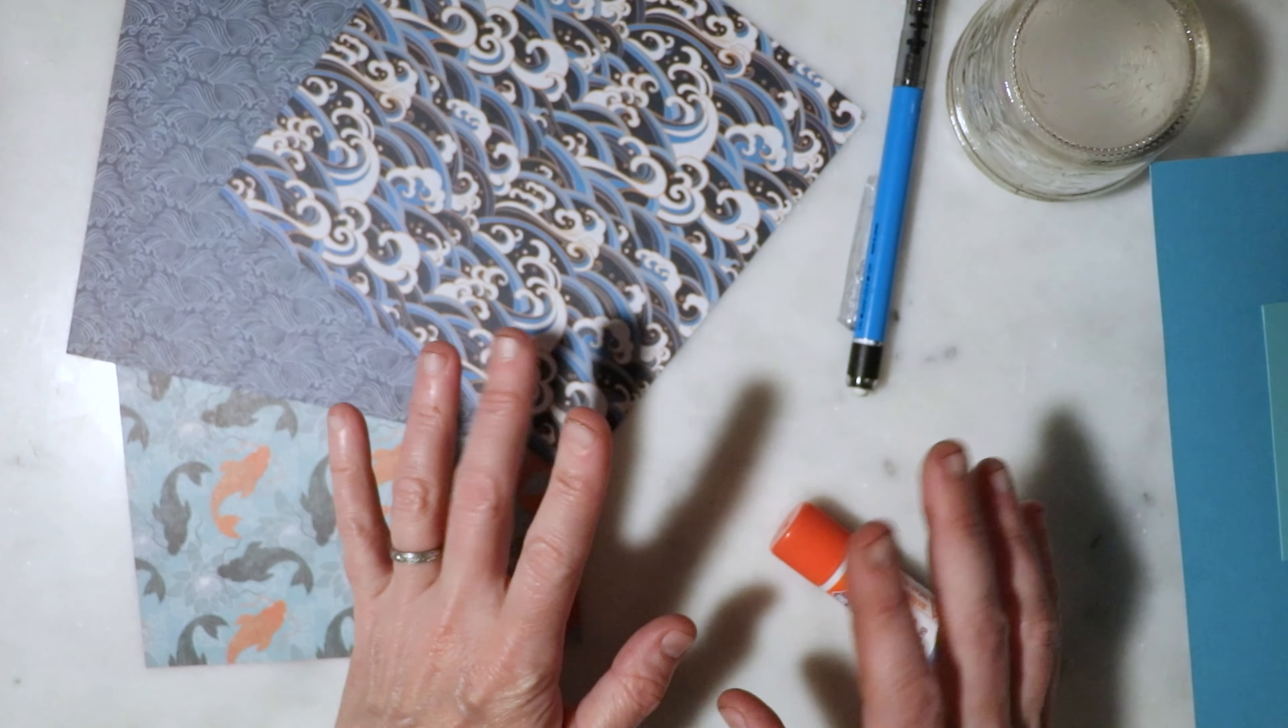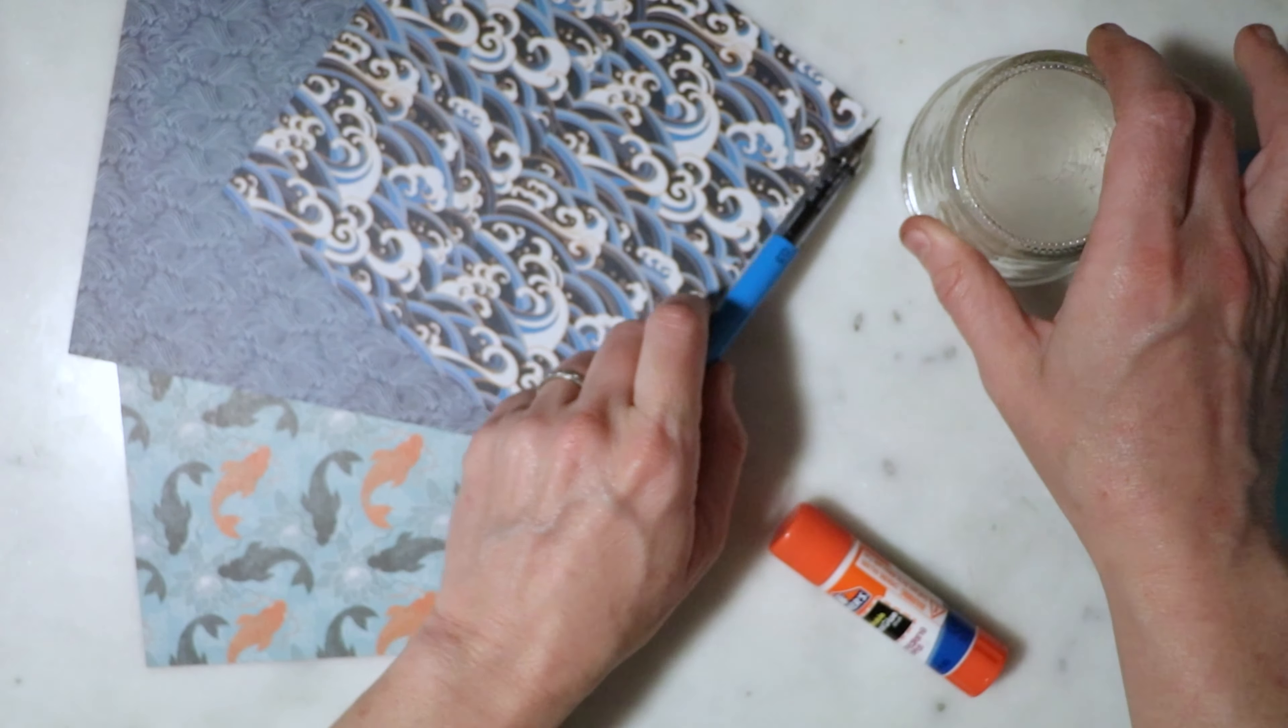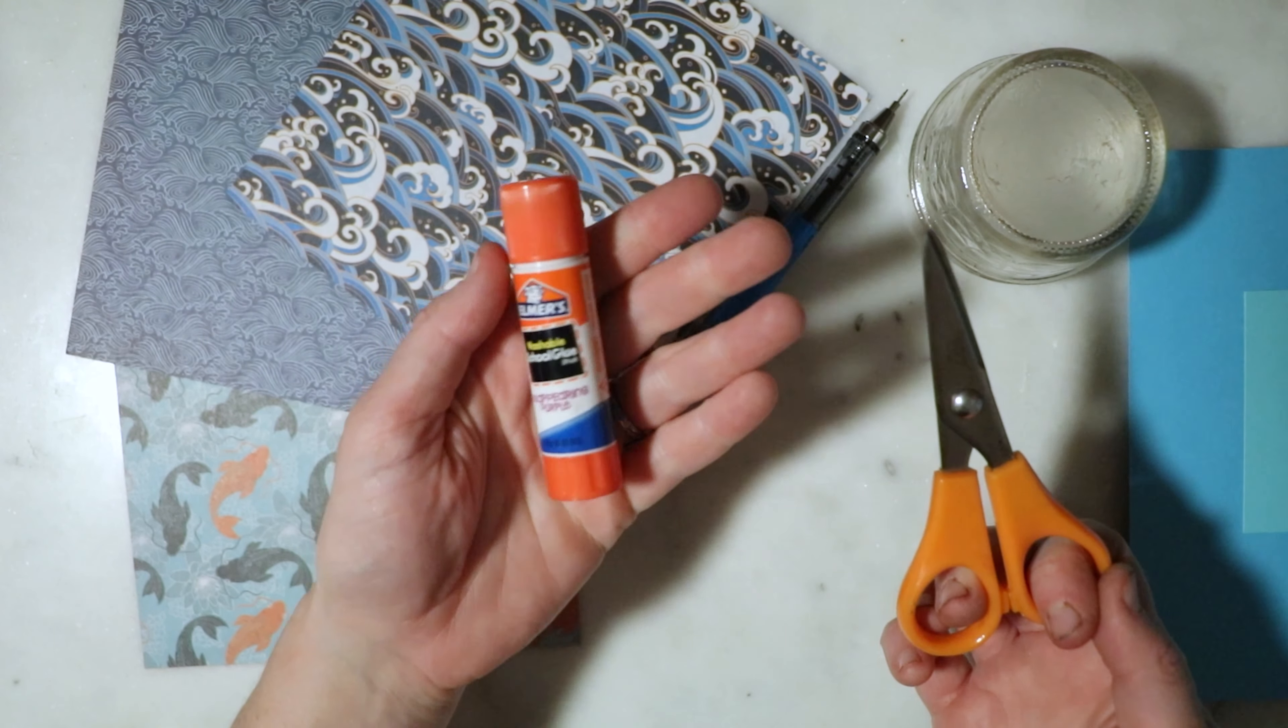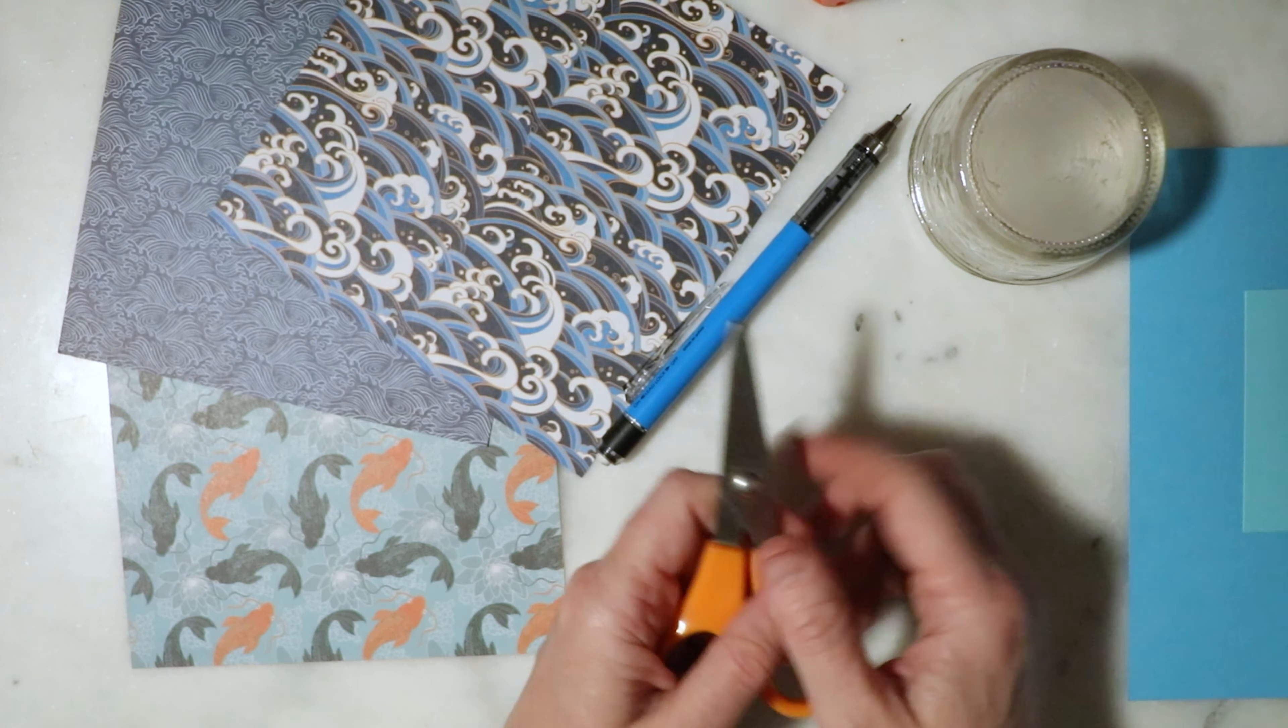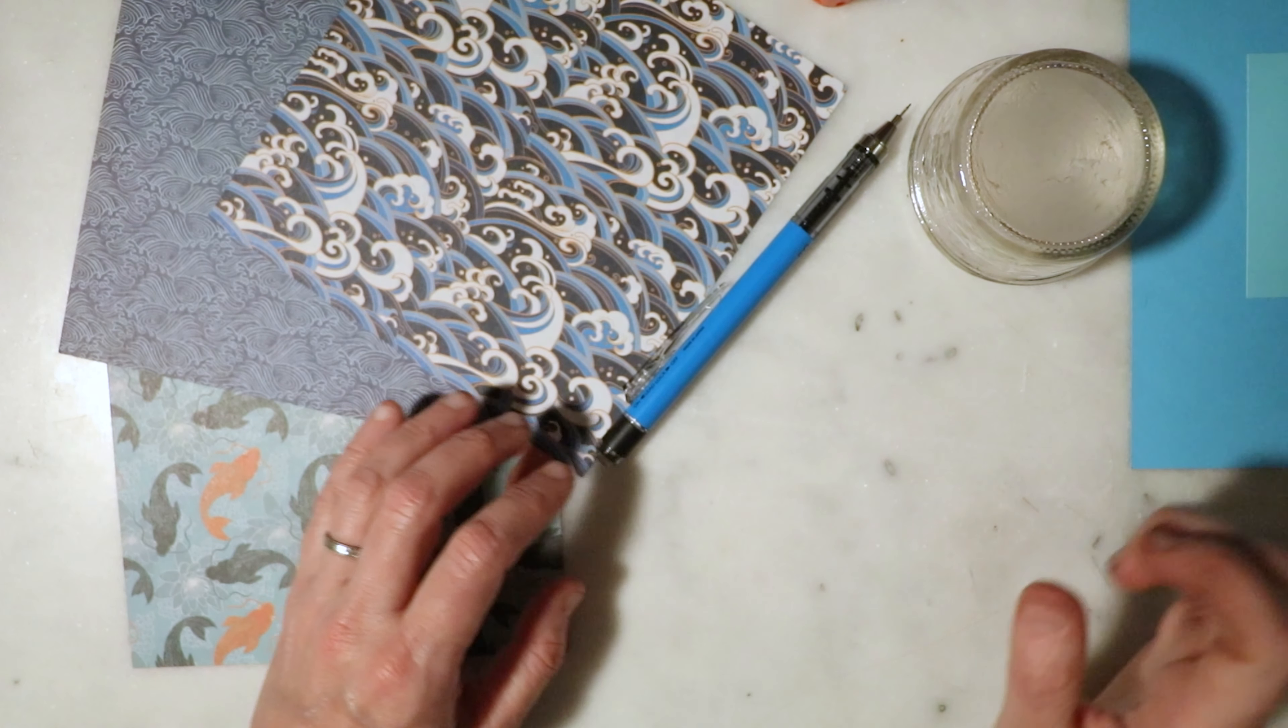What we need other than our pieces of paper will be a pencil, something round, and some scissors. Optionally, we could also use some glue, but this part's optional. Really, the main things you need are paper, pencil, something round, and your scissors.